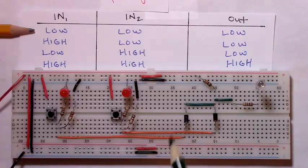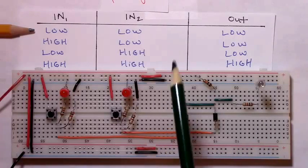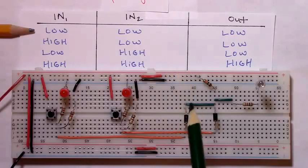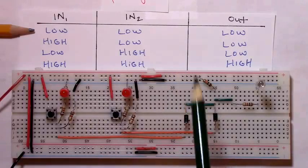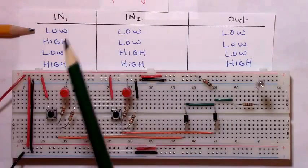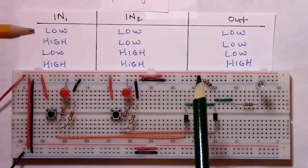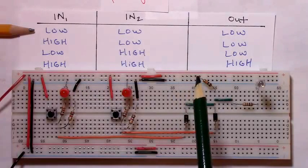In order to convince ourselves that this circuit is in fact an AND gate, all we have to do is make sure that its input-output behavior matches its digital logic input-output table, or what's sometimes referred to as its truth table.